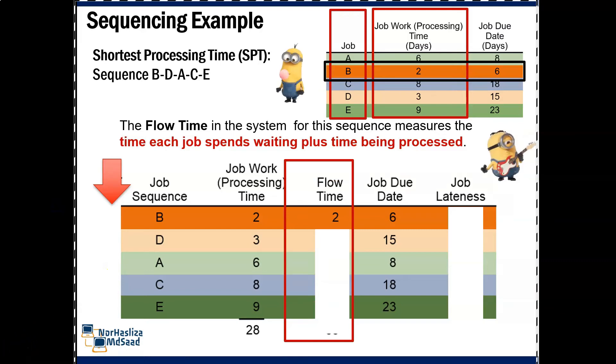For B, job work time is 2, flow time 2, job due date is 6. For D, job work time is 2 plus 3, equal to 5.